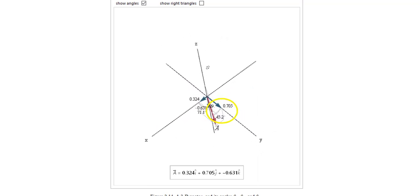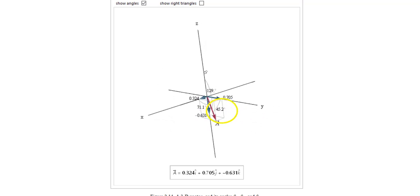Beta is measured from the y-axis. We can see that here, about 45.2 degrees.